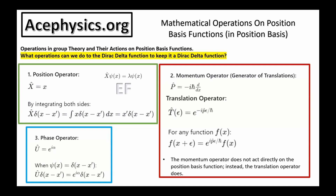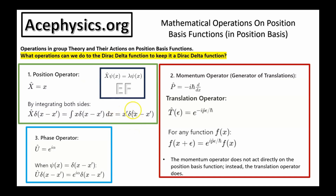In quantum mechanics, there are three primary operations on eigenfunctions. You can multiply a function by a constant x, represented by an integral to encompass all x values — this is the position operator. The position operator is simply multiplying a function by x. The Dirac delta function is an eigenfunction of the position operator. When you act the position operator onto the Dirac delta function, you scale it: you simply get x-prime multiplied by the Dirac delta function.